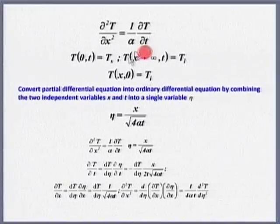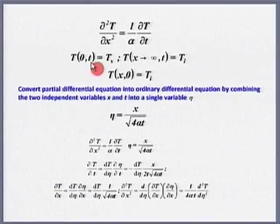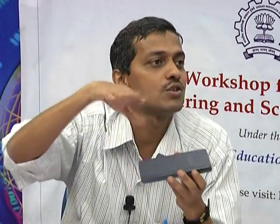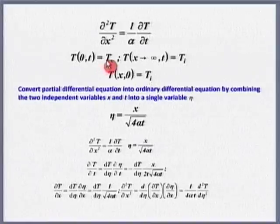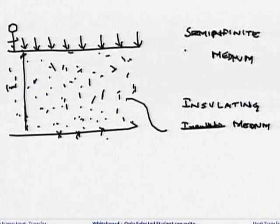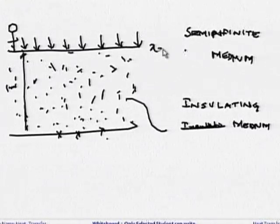What are the boundary conditions? T at x=0 equals T_s — that means I have started flowing hot water, which is how I have maintained a constant wall temperature boundary condition. So T at x=0 equals T_s. In this problem, x=0 is one surface and x=L is the other.